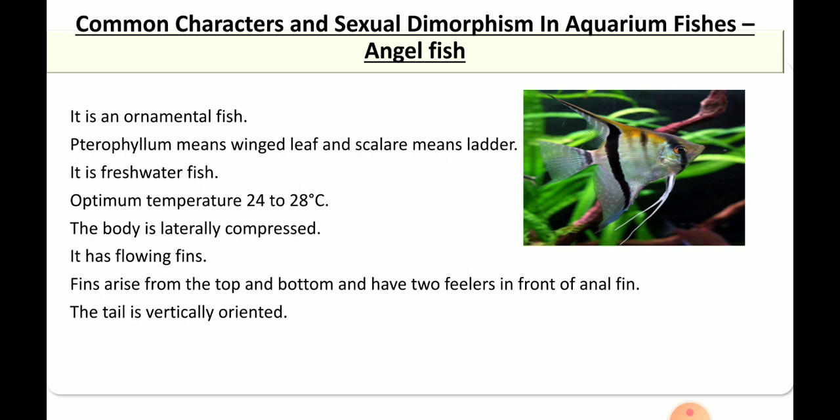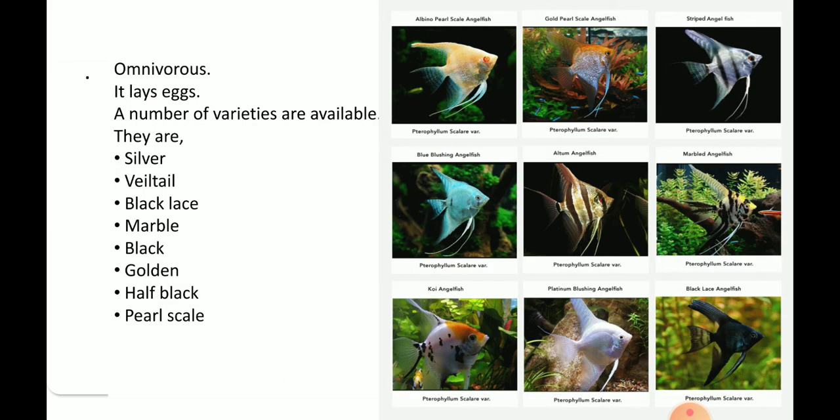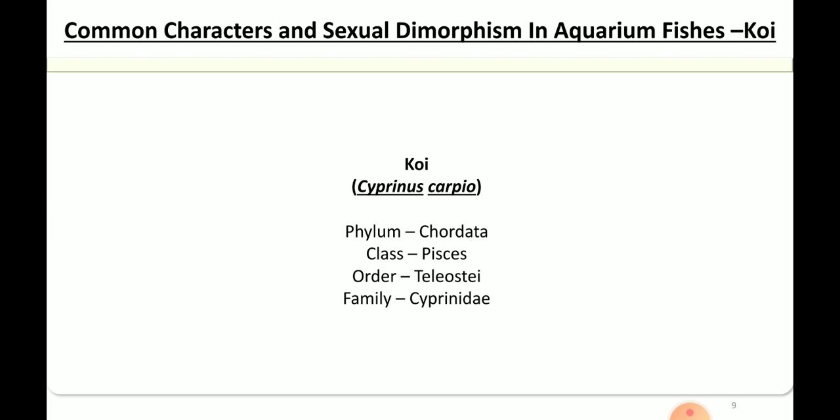The tails are oriented and arise from top to bottom. Angelfish are omnivorous and they lay eggs. There are a number of varieties including silver, black lace, marble, black, golden, pearl, and half-black. These are some of the different types of angelfish. Next we will move on to the other fish, which is koi.